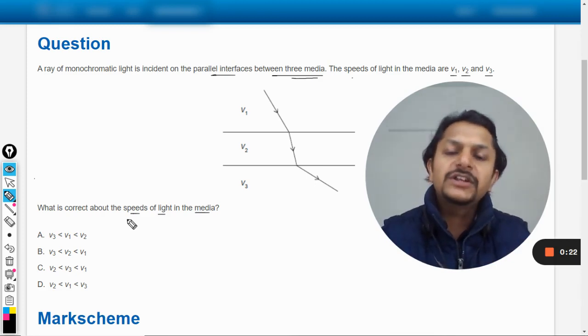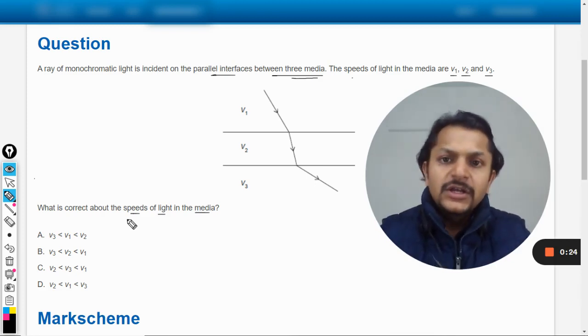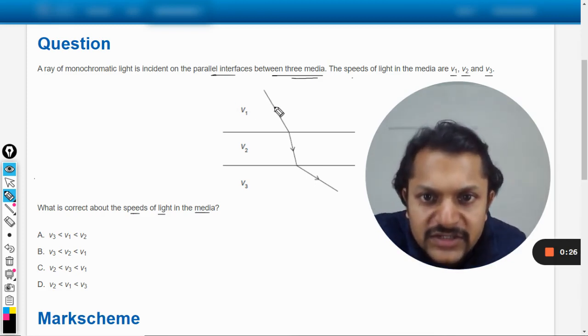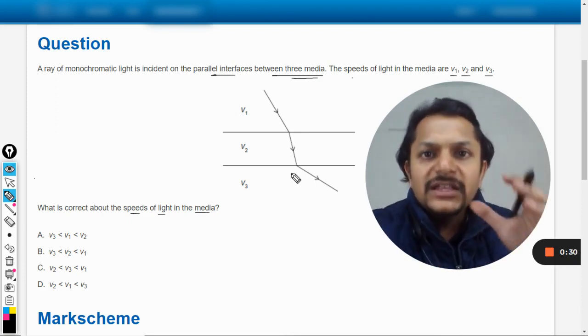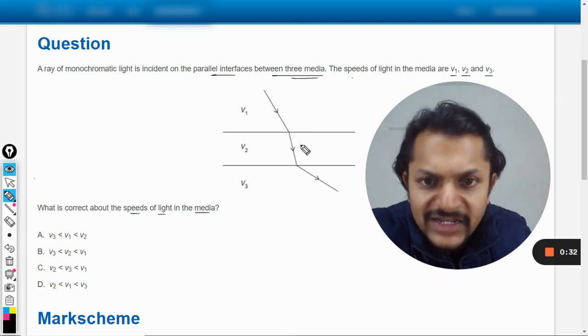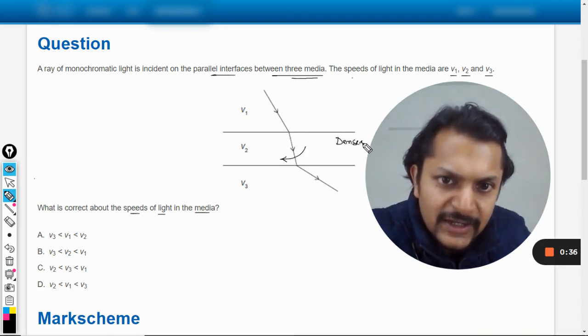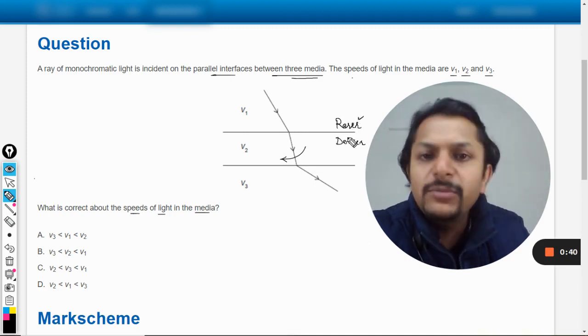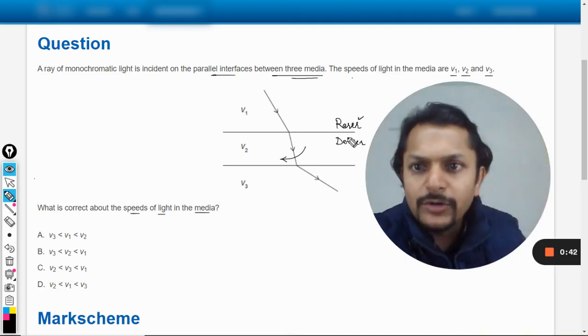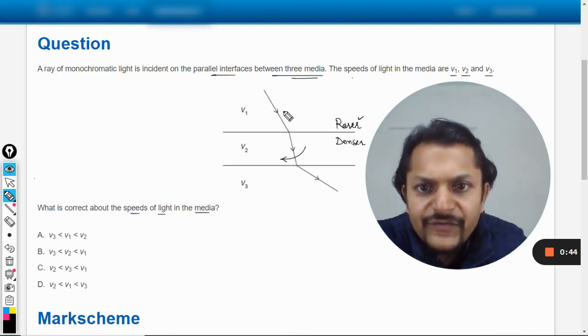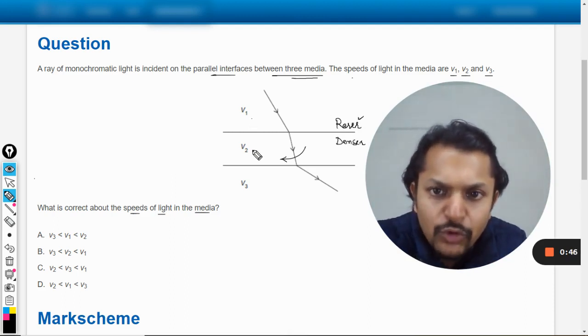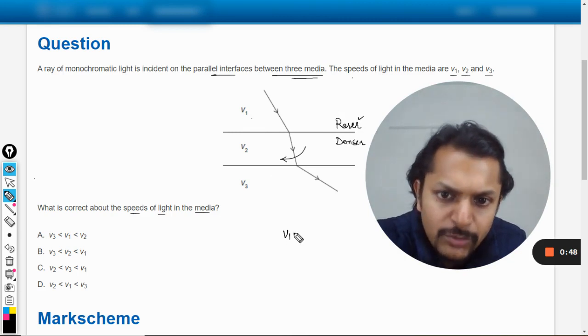So let us say the ray is coming like this and then entering the second medium. The ray in medium two is bending towards the normal, so I can say that this is denser and this is rare. We know that in the rare medium, the velocity is more. So v1 will be more than v2 - we are sure about this.